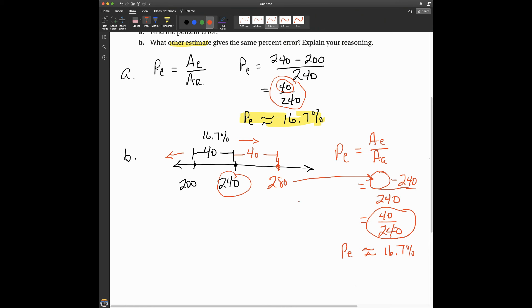Or you could guess the actual amount. Then your numerator would be zero. And your percent of error would be zero percent, which means you got it. You hit the nail on the head. You guessed correctly.